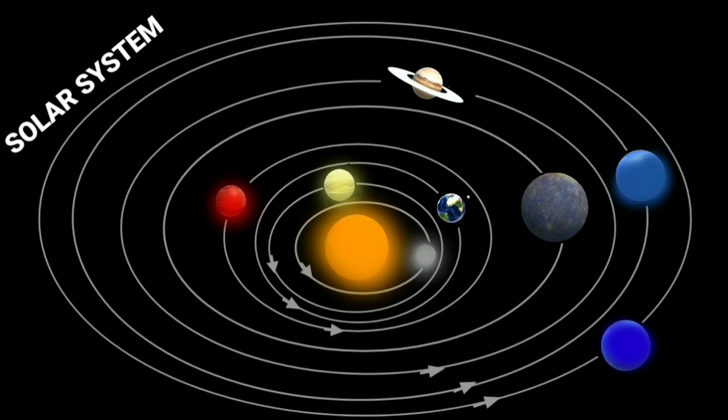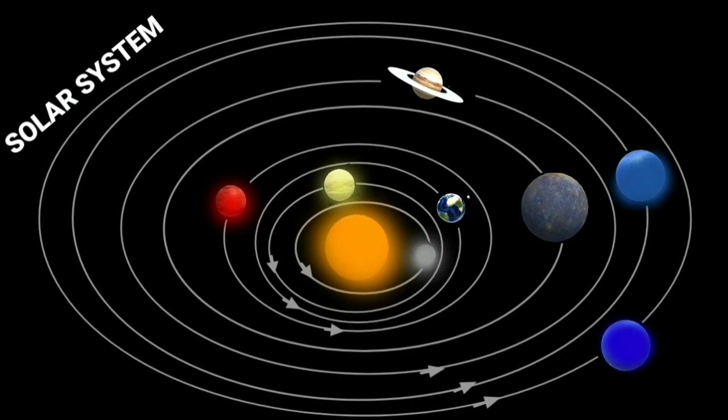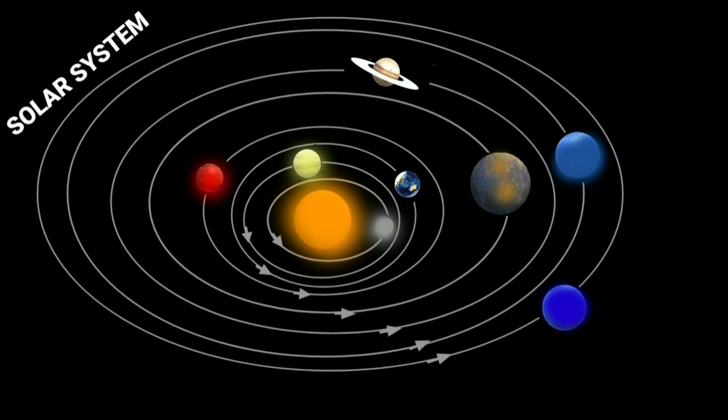Children, do you know why the planets do not collide while revolving around the sun? Because planets move in their own orbits. Besides revolving around the sun,